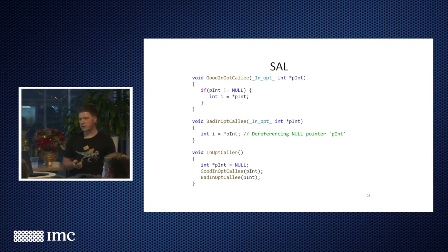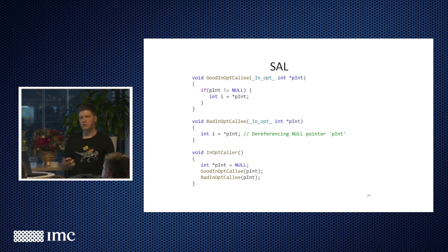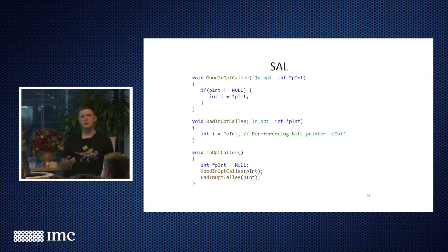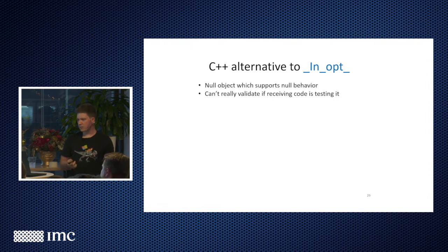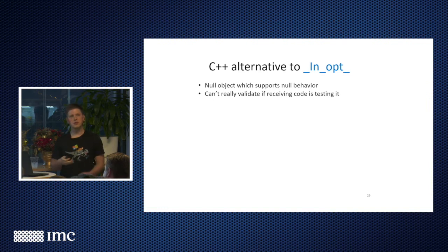And when you're built with Visual Studio, and when you get warnings from it, part of those warnings, because STL from Visual Studio is heavily annotated, so you get some of those warnings because of this. In C++, that's not really alternative. You can have null objects, and you pass object by reference, but you can't really check if consuming code is checking for this null object and doing something sensible with it. So you have to rely on tests.